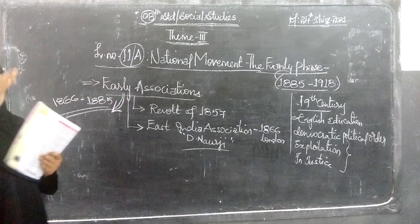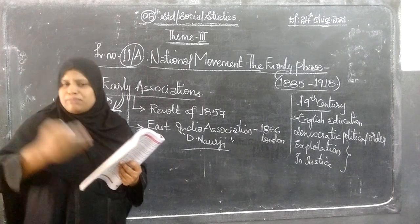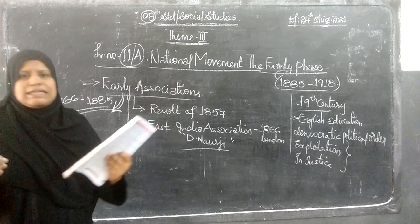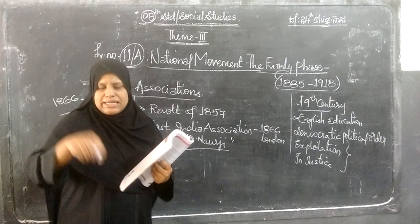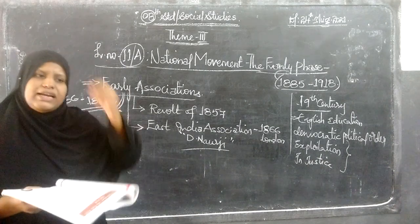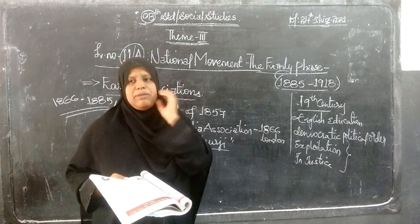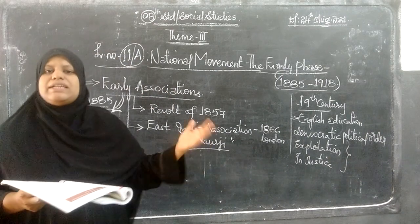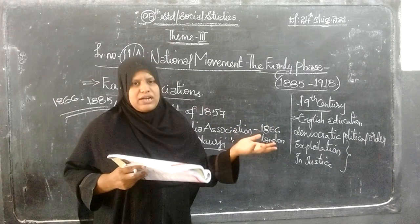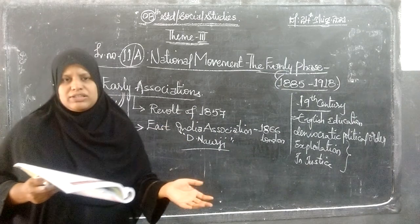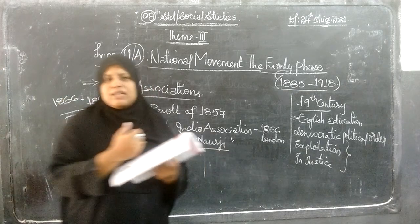These early associations were in places like Maharashtra, Madras (Chennai), Bombay (Mumbai), and Calcutta (Kolkata) — all known as provinces at that time. Each province had a particular leader. For example, in Pune there were leaders, in Chennai leaders like Subramaniya Iyer. These were the leaders of the early associations who tried to create awareness about the problems Indian people were facing in each province.